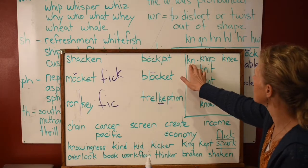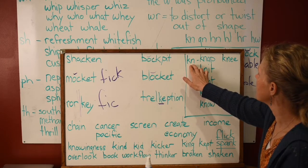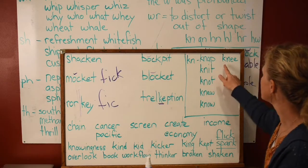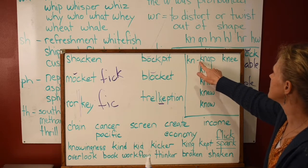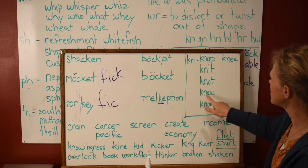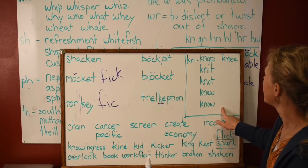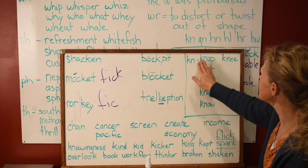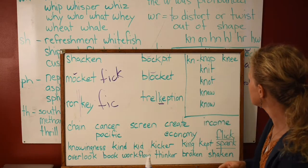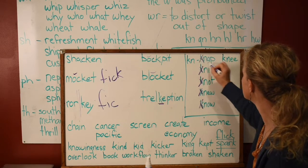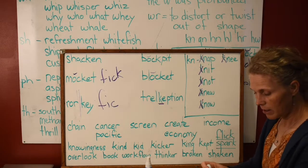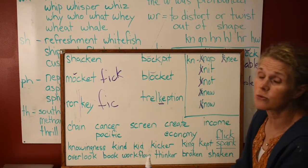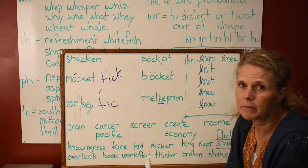Now let's look at the KN digraph — this says the N sound. It used to say 'knap,' but now it says nap, knee, knit, not, new, no. The N is the strong letter here. If we take off these K's, look what happens — they make completely different words. They have the same sound — they're homophones. This is why those K's won't come off; there's been some debate about that, but they can't come off because they make different words.